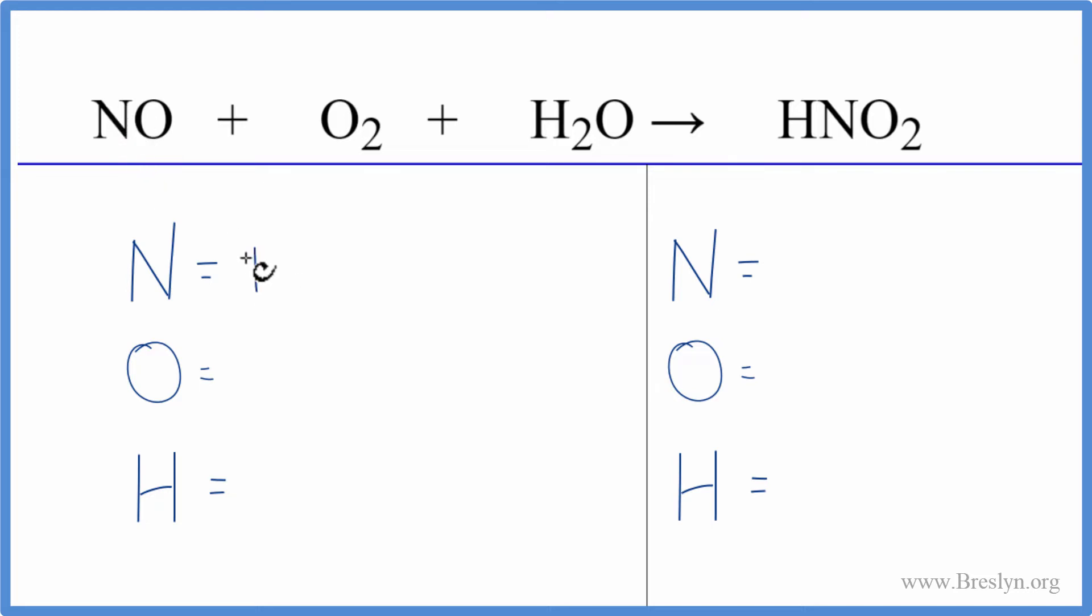We have one nitrogen, we have one oxygen, plus though we have these two oxygens and then we have one more in the water. So you have to count all those up, four oxygen atoms and then two hydrogen atoms. On the product side we have one nitrogen, one hydrogen, and then the two oxygens. It's pretty close.